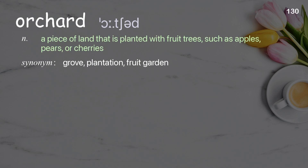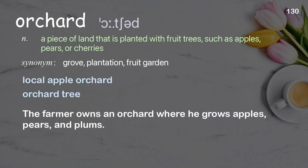Orchard: a piece of land that is planted with fruit trees such as apples, pears, or cherries. Examples: local apple orchard, orchard tree. The farmer owns an orchard where he grows apples, pears, and plums.